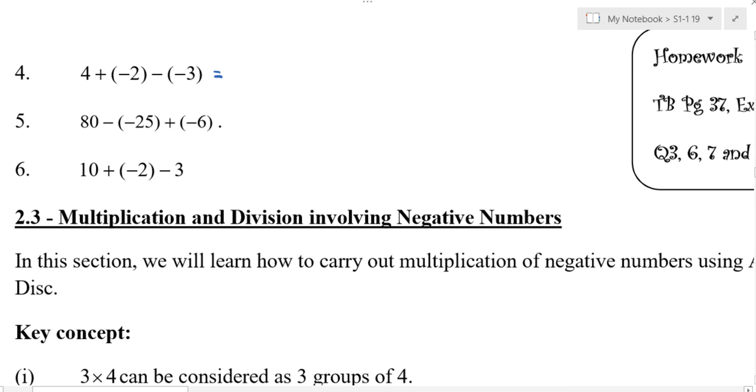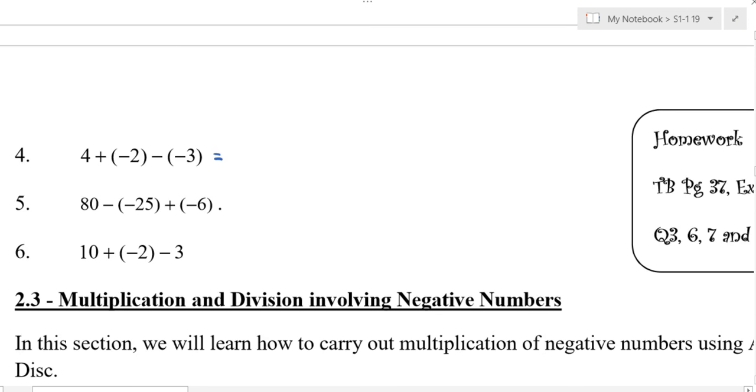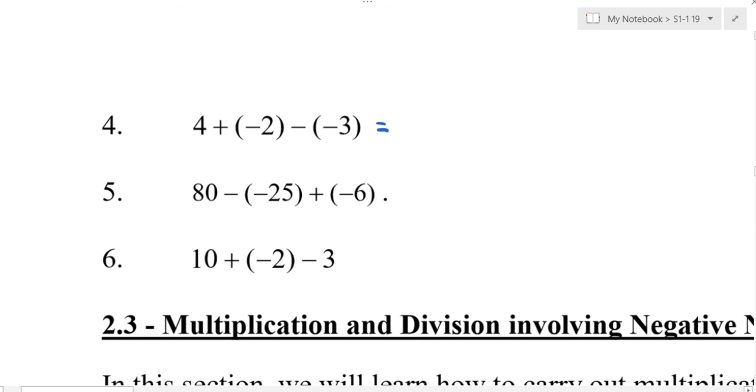Next one, number 4: 4 plus negative 2 minus negative 3. You want to try? You get 5. Okay, let's check if 5 is correct. 4 plus negative 2 equals 2. What about minus negative 3? It becomes plus 3. Can you follow? So 2 plus 3 equals 5. The answer is correct.